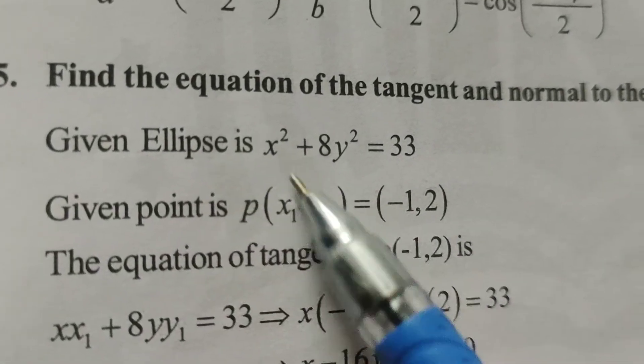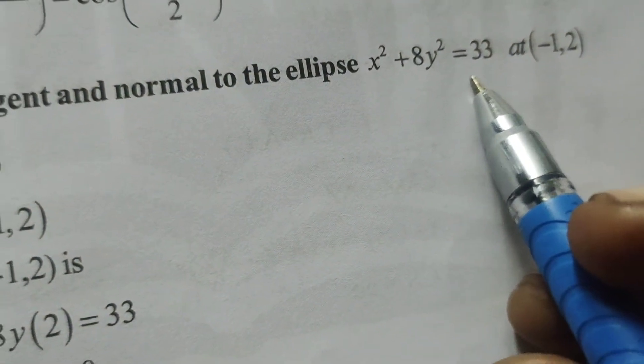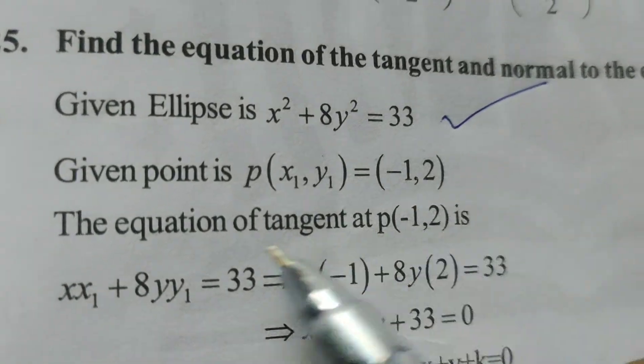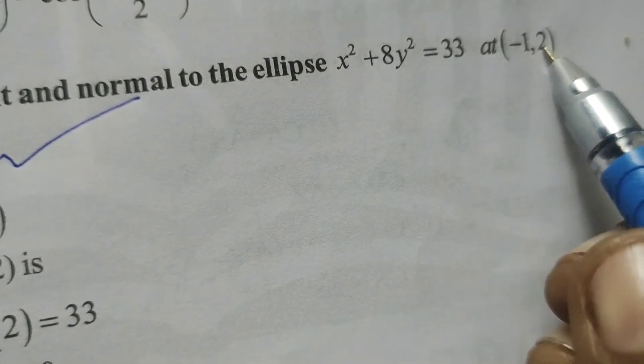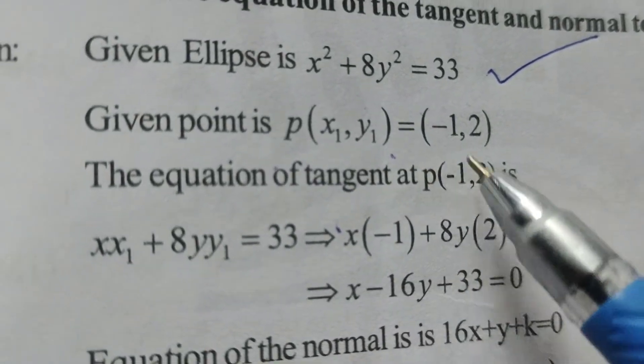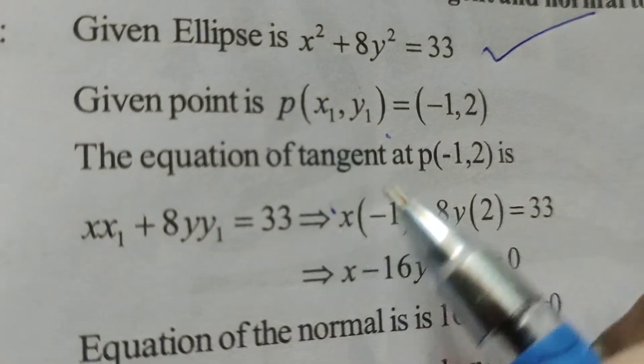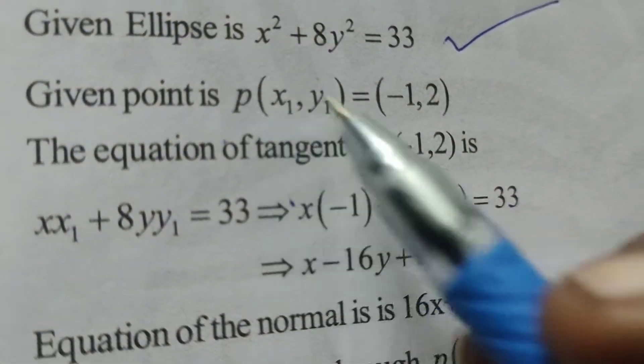Here, the given ellipse equation is x² + 8y² = 33 and the given point is p(x₁, y₁) = (-1, 2). The equation of the tangent at point p(-1, 2)